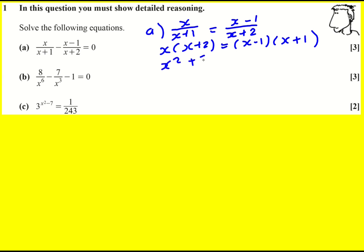Okay, x squared plus 2x is going to equal x squared minus 1 because this is a difference of two squares. We get x squared plus x minus x minus 1. The x squares cancel, 2x is minus 1 so x is minus a half.